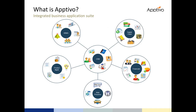So let's take a quick moment and talk about what Aptivo is. Aptivo is a suite of online business applications — we have about 45 to 50 apps in total. They all serve a different purpose, but they integrate with each other.